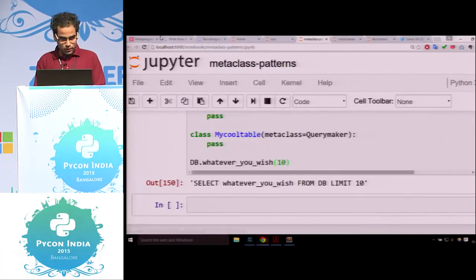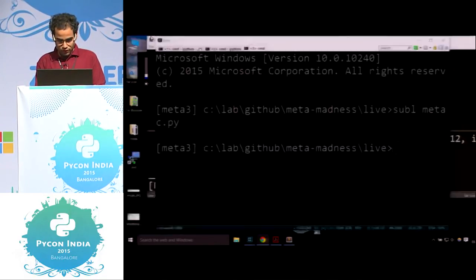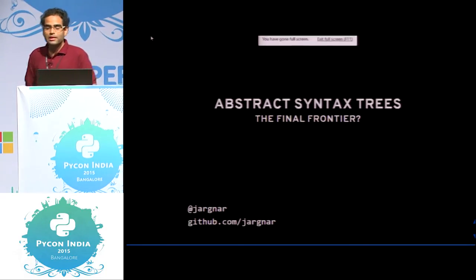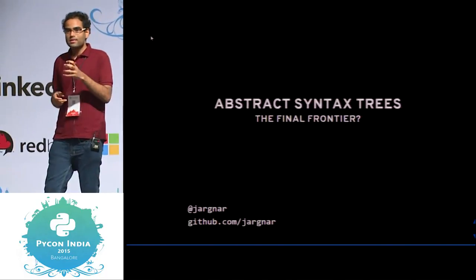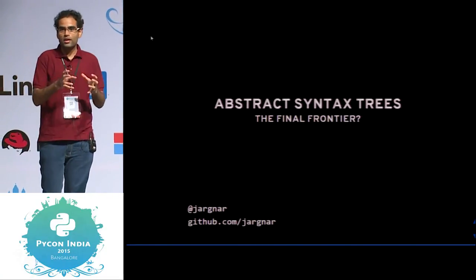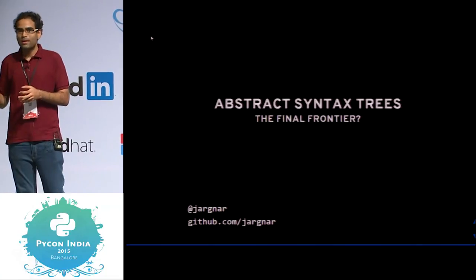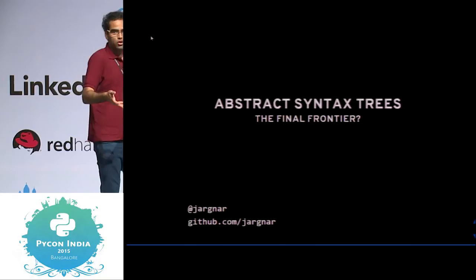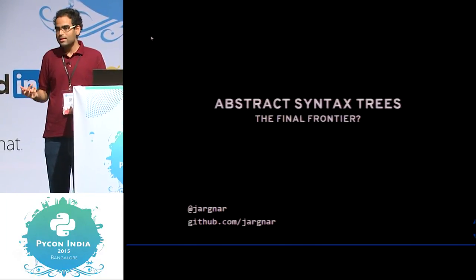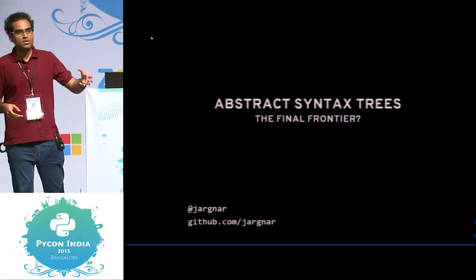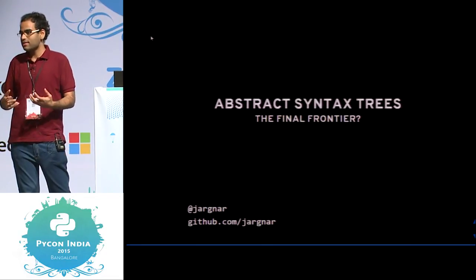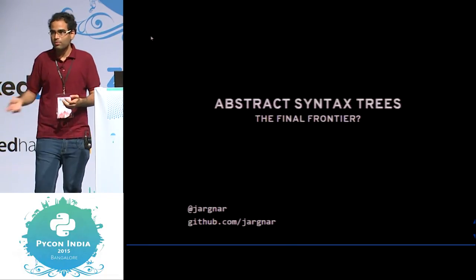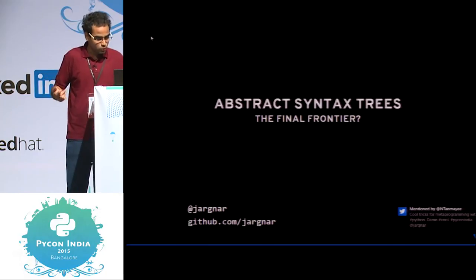The final frontier would obviously be abstract syntax trees. Python has an internal representation of code itself — code is translated into abstract syntax trees during execution, and the AST is then converted to the low-level language. There are homoiconic languages whose abstract syntax trees are written in the same language as the higher-level language. In Lisp, for example, the abstract syntax tree itself is in Lisp — something cool to explore. A lot of powerful things are possible with that. It's about having fun, really. Thanks.